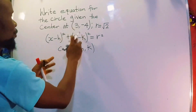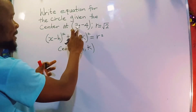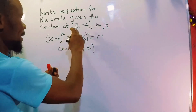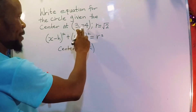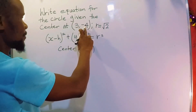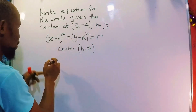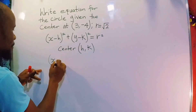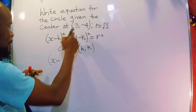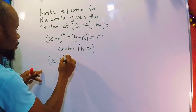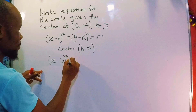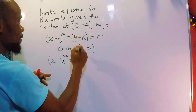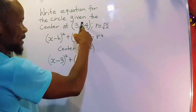So what we need to do: in this case, the center is h and k. h is 3 and k is minus 4. So we have (x minus 3) squared plus (y minus ...